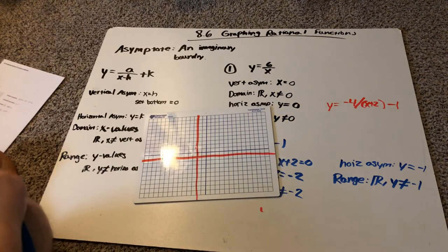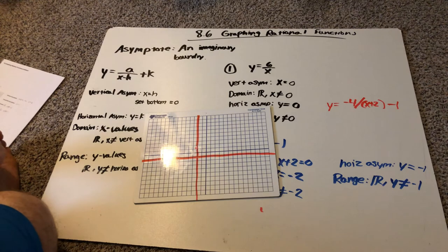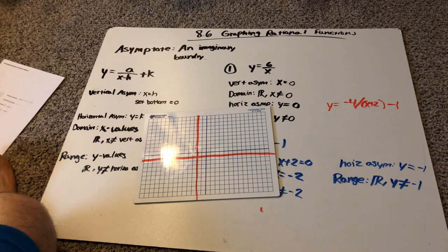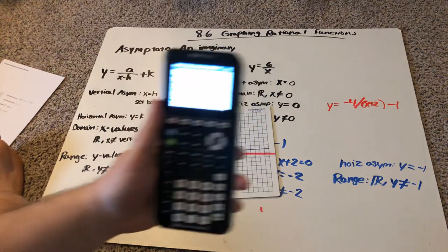If you have more than one thing on the top, put it in parenthesis. If you have more than one thing on the bottom, put that in parenthesis. So negative four divided by parenthesis x plus two close my parenthesis minus one. Put that in your calculator. Second graph. And you get a table full of points.